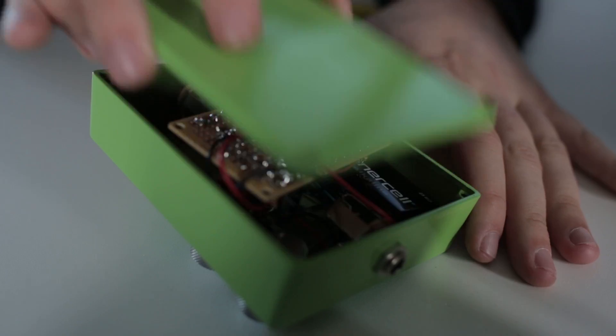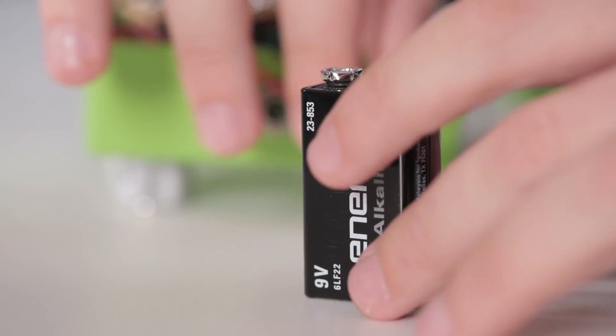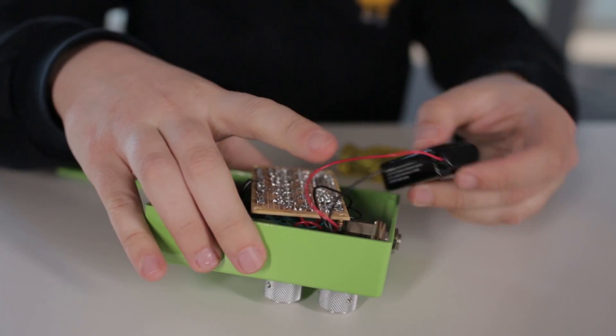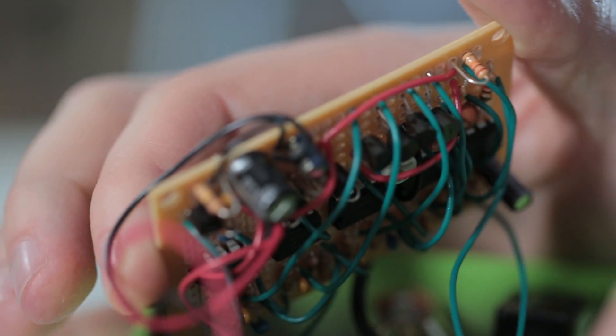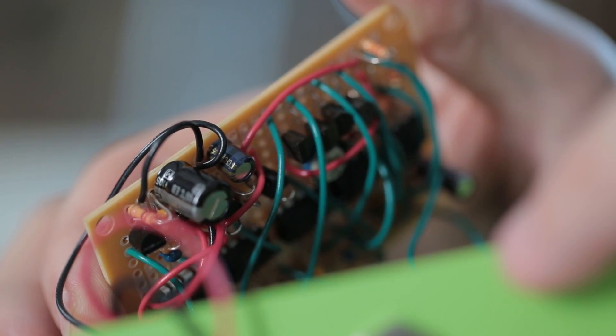This circuit is entirely analog, which means I used a lot of traditional components like resistors, capacitors, transistors, and op-amps like the LM741 and I got all of these at RadioShack.